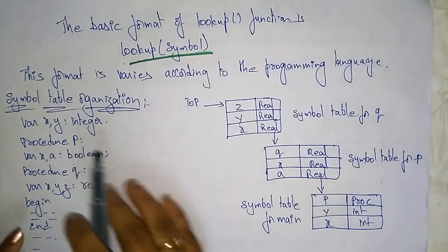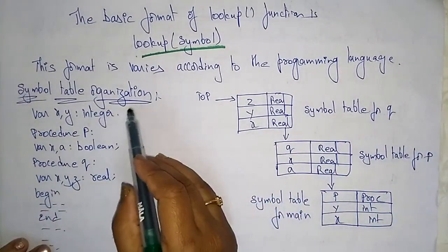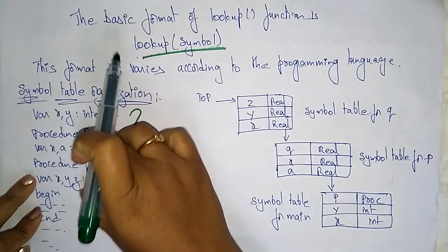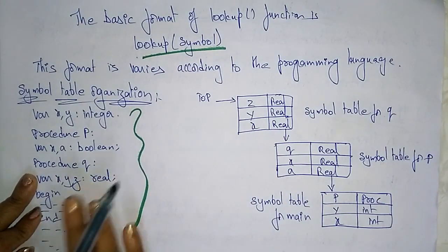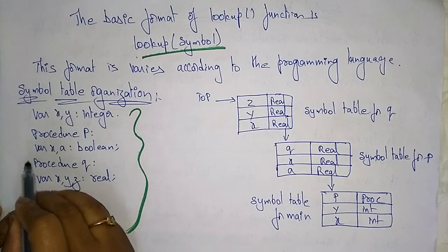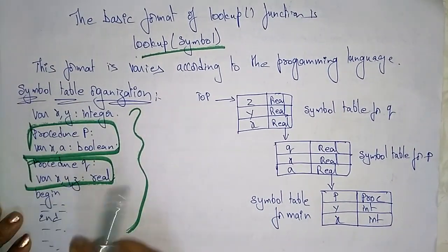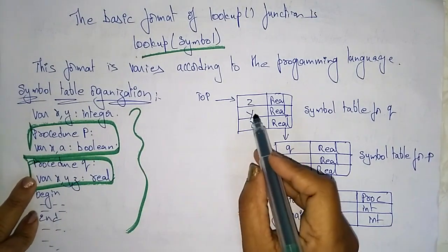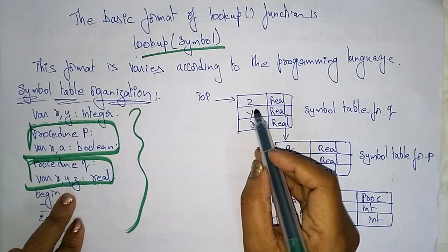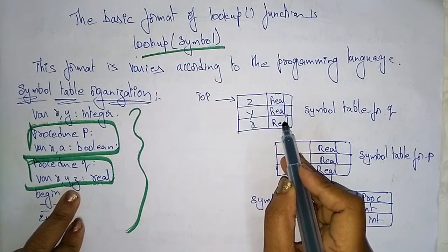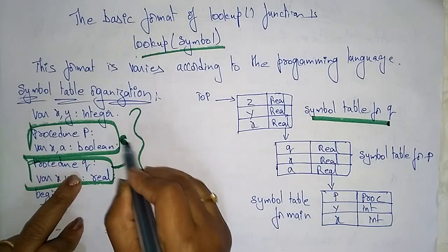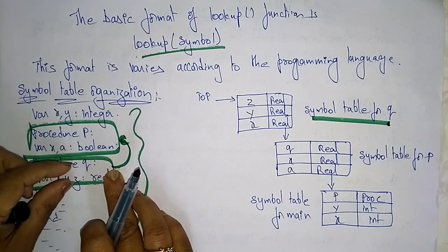Let's see symbol table organization with a sample program. This program is going to store the variables and values used in the program in the symbol table. There is one procedure and another procedure. The first procedure has three variables z, y, x of data type real, which is a symbol table for procedure q — q is a sub-procedure of this procedure.